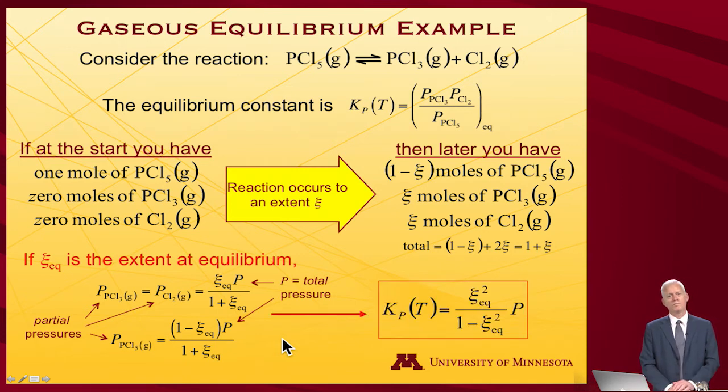So Kp then is equal to—we're going to go up here—this P, which is defined by this, times this P, which is defined by this. So I get a total pressure squared in the denominator. There will also come in a total pressure factor from PCl5, so I'll end up with a single pressure.